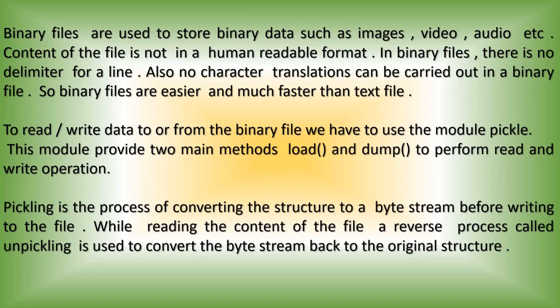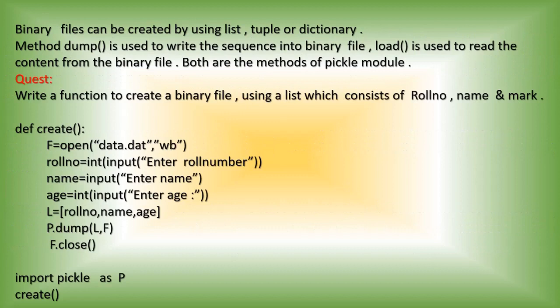When you create a binary file, we have to import the module pickle into our program. The file mode for writing a binary file is wb — where w means write and b represents binary. For a text file, we use mode w or r. For a binary file, the mode is wb or rb. You have to use the alphabet b along with the mode to indicate it is a binary file.